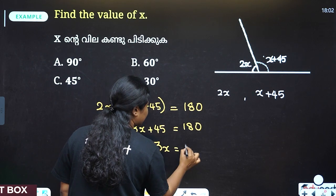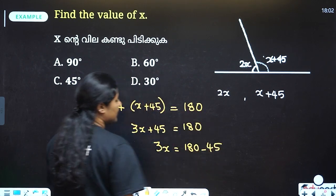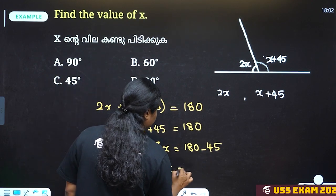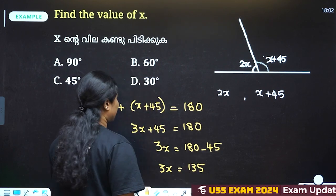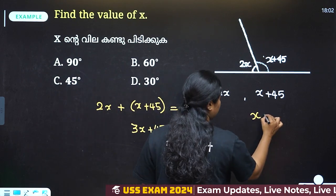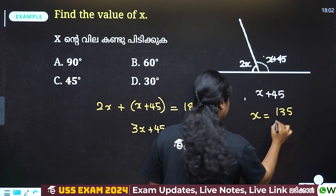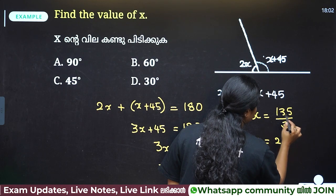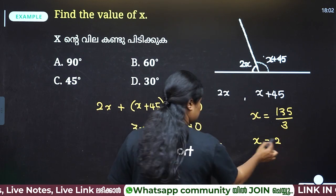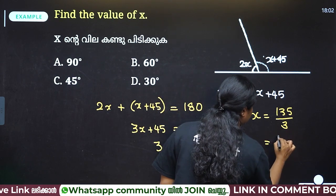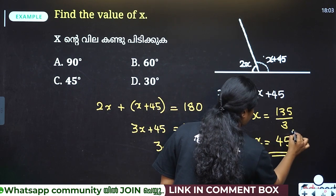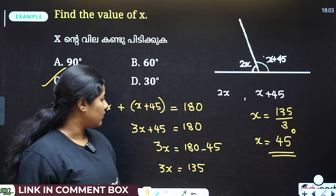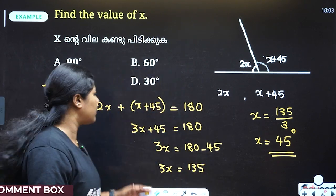Plus 45 is equal to 180. If we have 3x equal to 180 minus 45, that is 135. So 3x equals 135. x equals 135 divided by 3, which is 45 degrees. x is equal to 45 degrees. Option C. This is the calculation here.